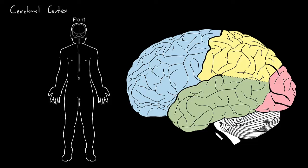Down here is the cerebellum, and here is the brain stem. The cerebral cortex has these ridges and grooves on its surface — it's kind of all wrinkled up and folded up.